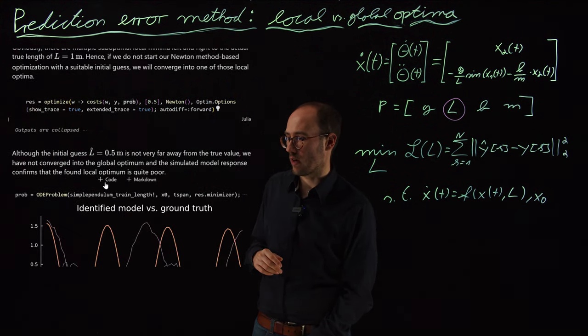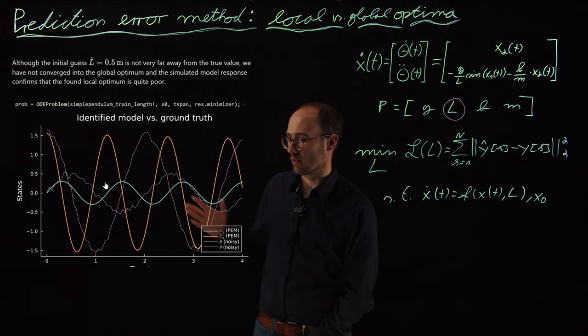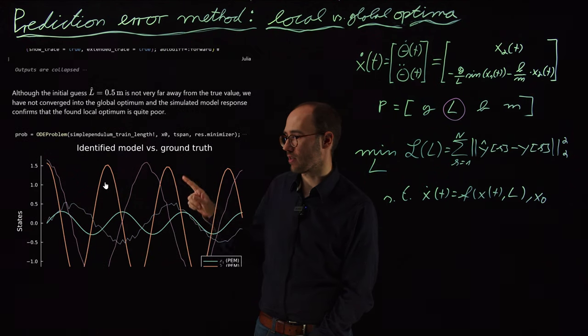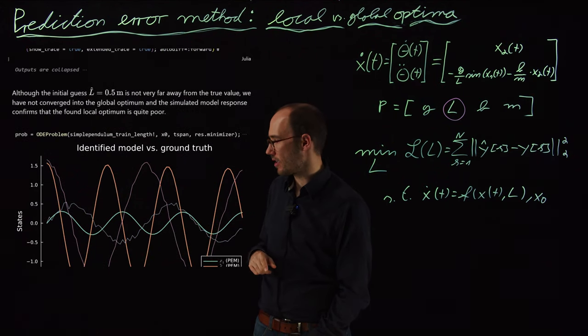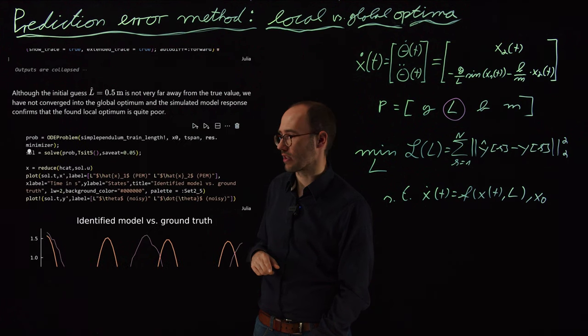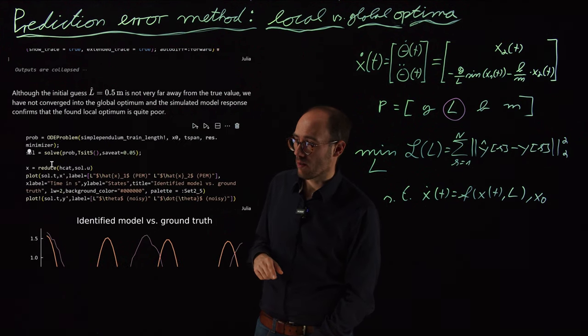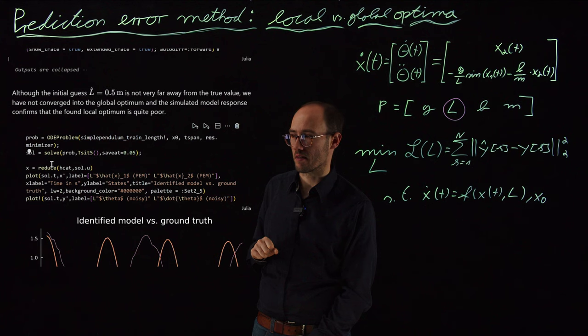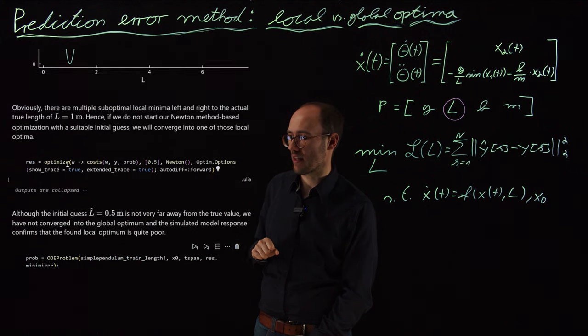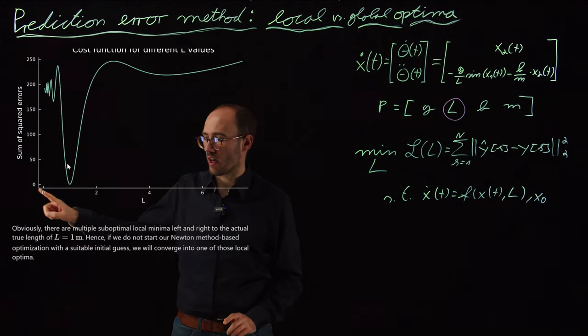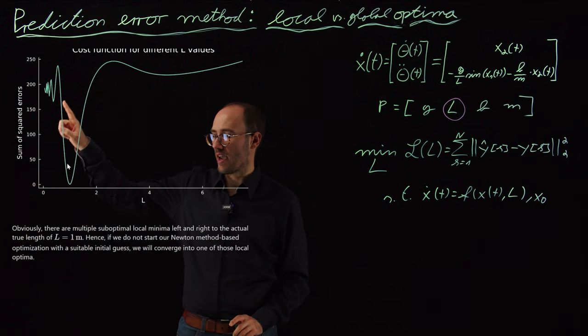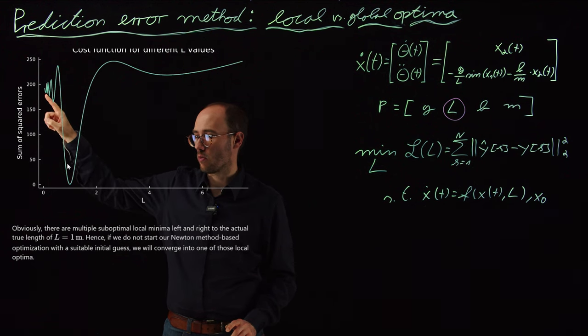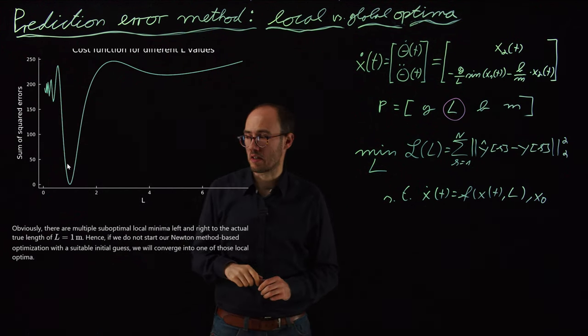However, if we solve that, we will find out that the actual outcome of the solution is really bad. If we go into the solution here, we will actually find that the solution of the problem is around 0.25 meters. That basically means that the optimization solver being initialized here has not converged into this global optimum, but has converged into one of these neighboring local minima.